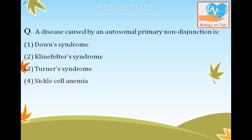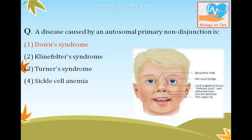A disease caused by autosomal primary non-disjunction is Down syndrome. It occurs due to non-disjunction of the 21st chromosome. All the symptoms can be seen in the diagram — epicanthal folds, flat nasal bridge, thin upper lip, etc.